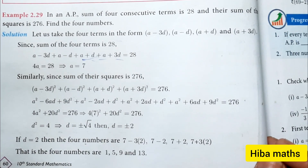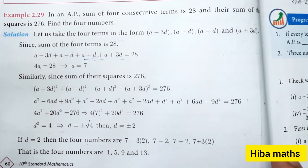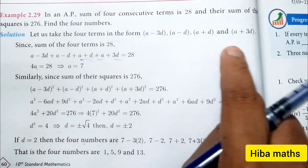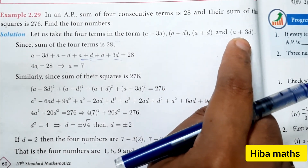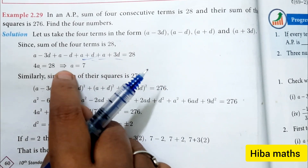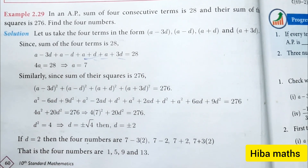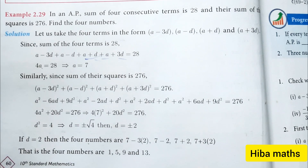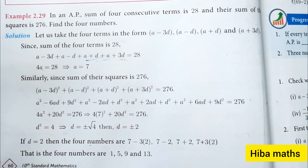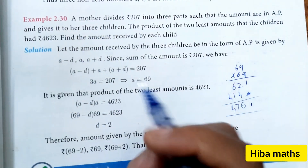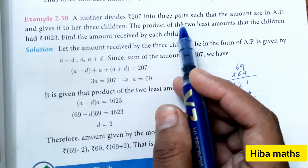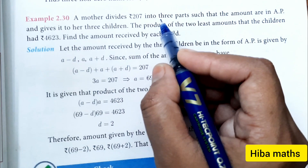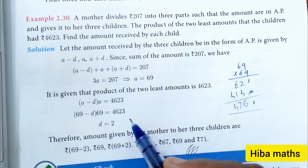Example 2.29: In an AP, the sum of 4 consecutive terms — this is a 5-mark repeated question. The four consecutive terms are written as a minus 3d, a minus d, a plus d, a plus 3d. Their sum equals a value and d value through cancellation. Example 2.30: A mother divides 207 into 3 parts such that the amounts are in AP. The 3 parts are 3 consecutive terms, and you use sum and product.